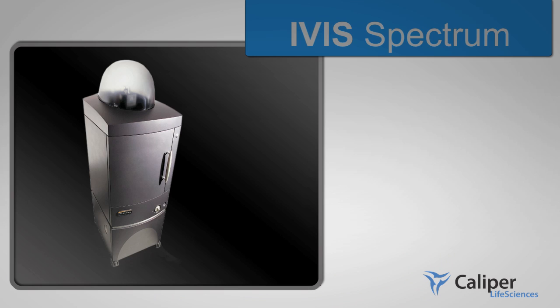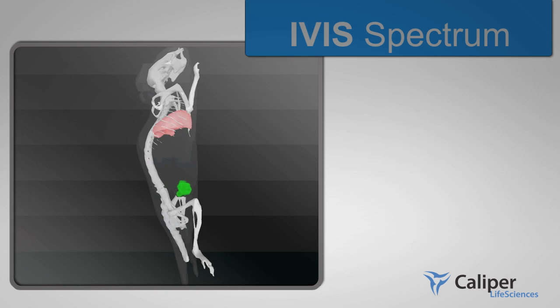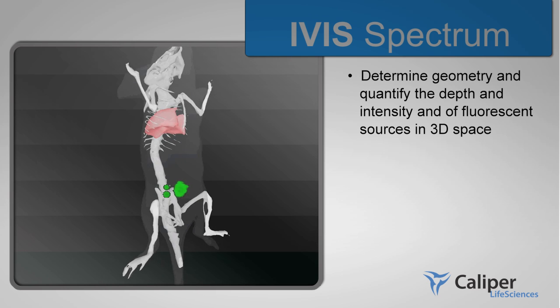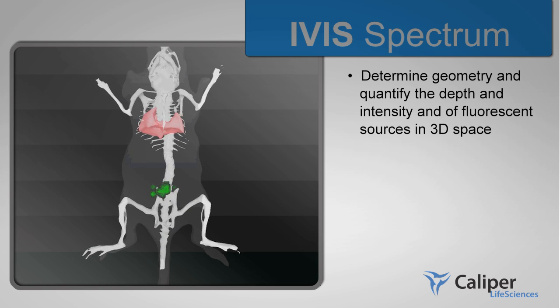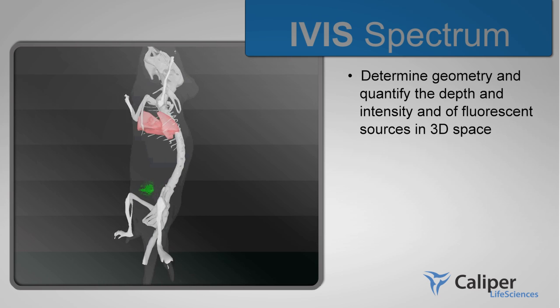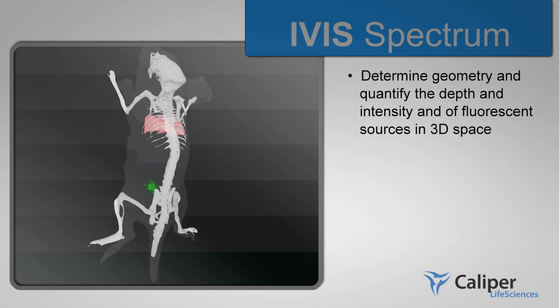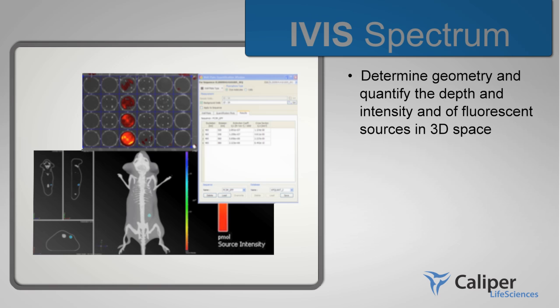Through IVIS Spectrum's advanced tomographic 3D analysis, you can determine geometry and quantify the depth and intensity of fluorescent sources in 3D space.